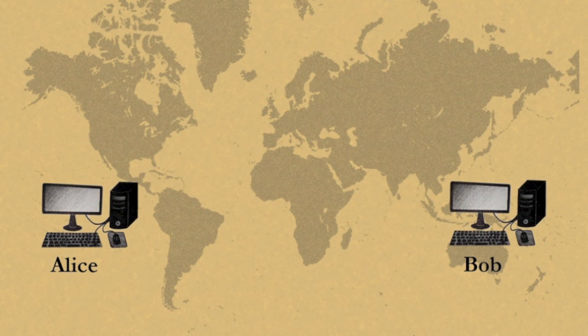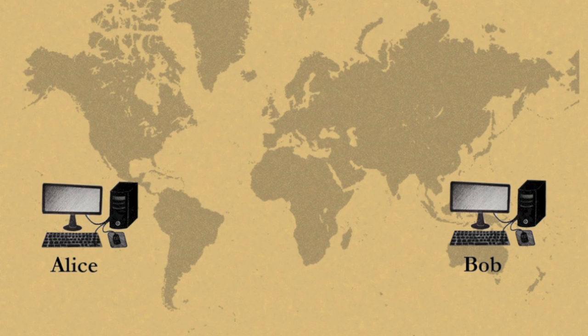We'll begin with the example of Alice sending an email to Bob. On its way to Bob, this email will travel through several companies.